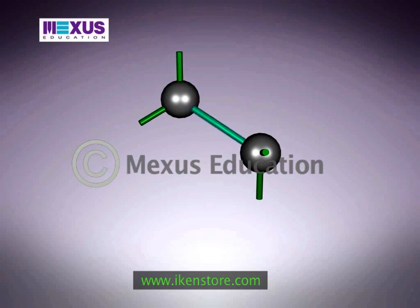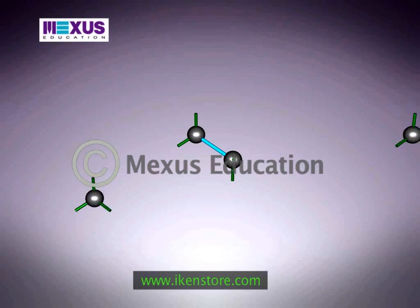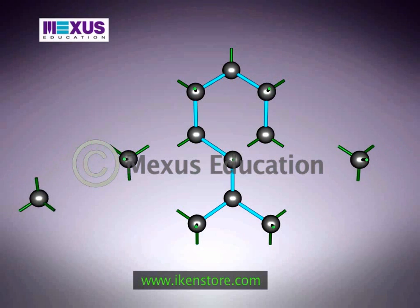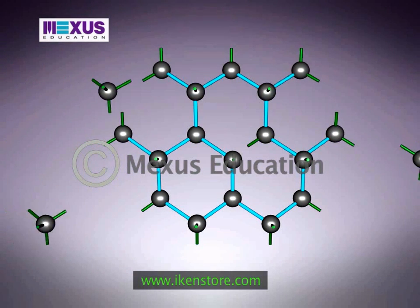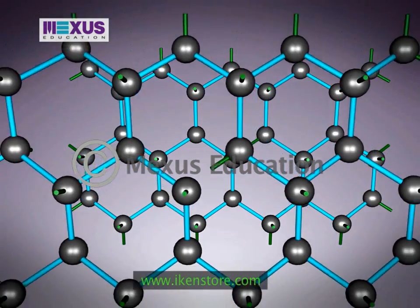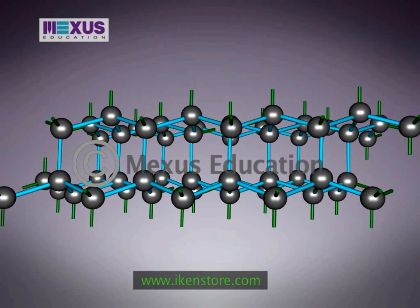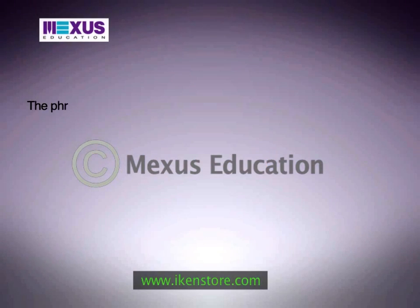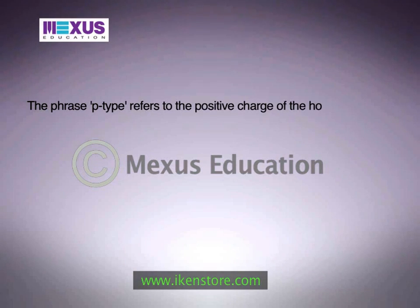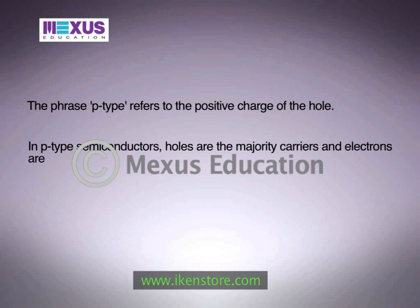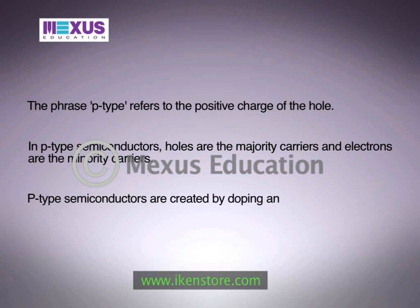P-type semiconductors: if a small amount of trivalent impurity is added to an intrinsic semiconductor, only 3 covalent bonds are formed, and there exists a vacancy in the 4th bond, creating a hole. This type of semiconductor, where positively charged holes are the current carriers, is known as a P-type semiconductor. The phrase P-type refers to the positive charge of the hole. In P-type semiconductors, holes are the majority carriers and electrons are the minority carriers. P-type semiconductors are created by doping an intrinsic semiconductor with acceptor impurities.